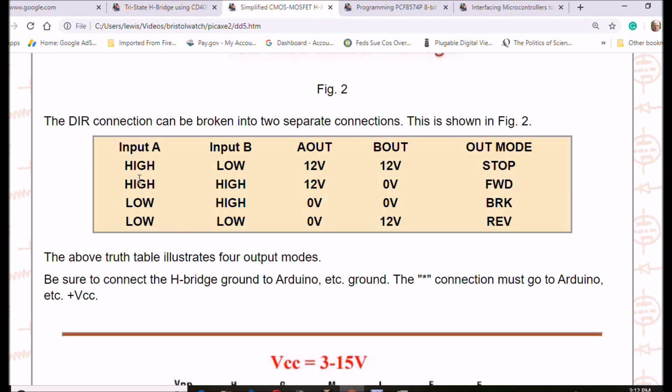Alright. If we have a high input on A and a high input on B, A is going to have 12 volts, B is going to have zero volts. Thus, the motor again is going to go forward or clockwise depending on how you're wired up the motor.